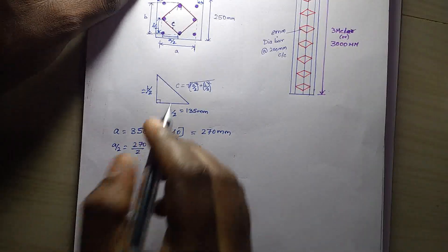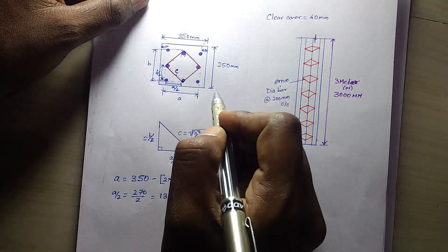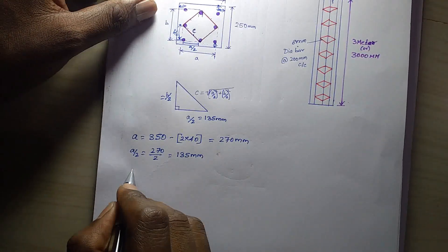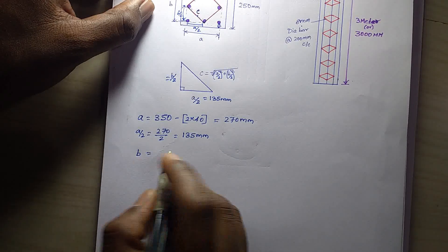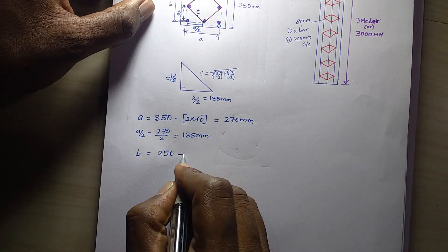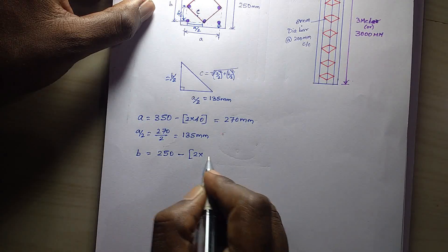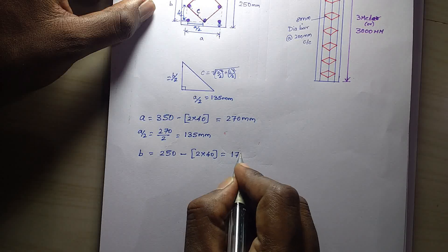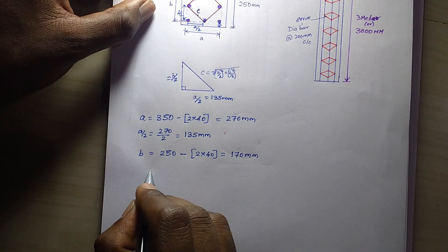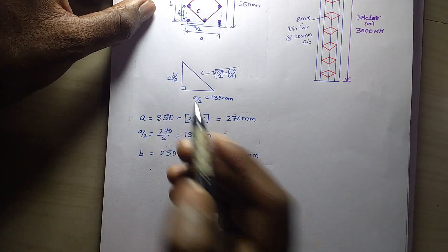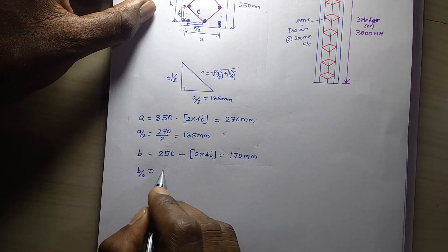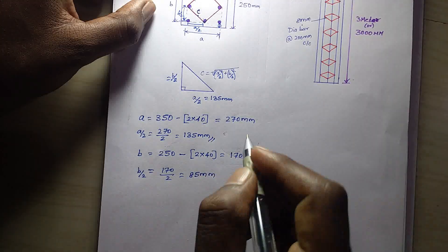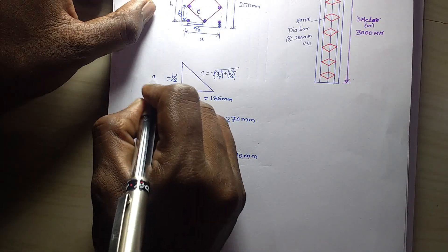The value is 'B by 2'. B by 2 is equal to the value. Total width 250mm — two side cover minus. The other side is the cover. Clear cover minus. B equals — to this side is the cover. So a by 2 value and b by 2 value is 85mm.